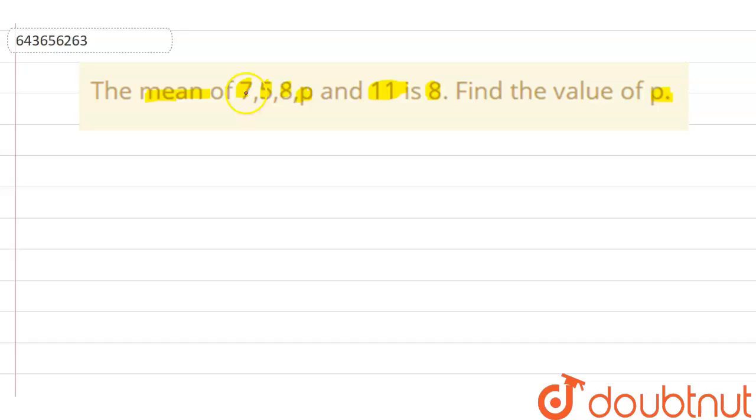So yes, the question says that the mean of these numbers is 8. So it means sum of these observations that is 7 plus 5 plus 8 plus p plus 11, and this divide by the number of observations that we are having.